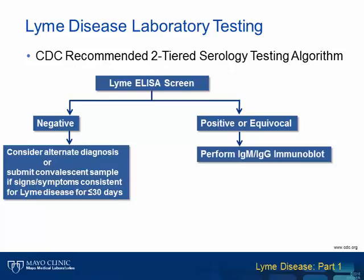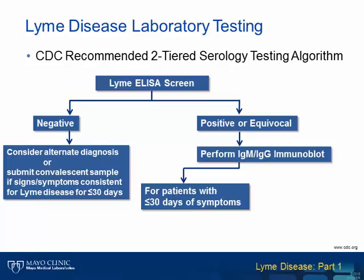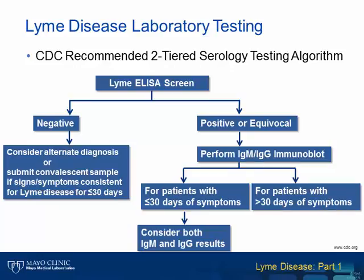For patients who have had symptoms for less than 30 days, both the IgM and IgG results should be considered. For patients with more than 30 days of symptoms, only the IgG should be considered, as the IgM result is the less specific of the two blots and may be present due to a previous infection. Finally, this algorithm is specific for use in serum only. For the diagnosis of Lyme CNS infection, or neuroborreliosis, a Lyme antibody index assay is recommended, which compares the level of antibodies in normalized serum and CSF.